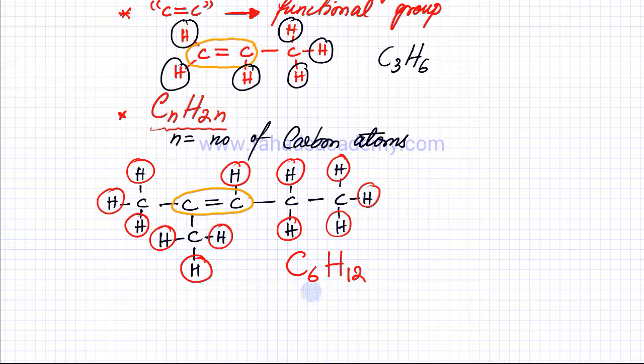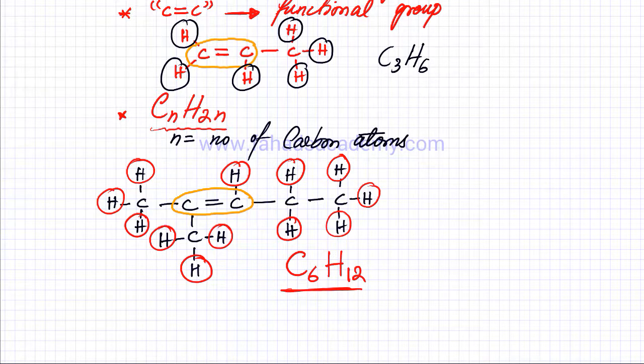The general formula directly tells me the total number of atoms in a molecule, and this is especially helpful for very large molecules whose structure would be very difficult to draw. For example, there could be alkenes with 50 carbon atoms, and the general formula would be helpful in that case.